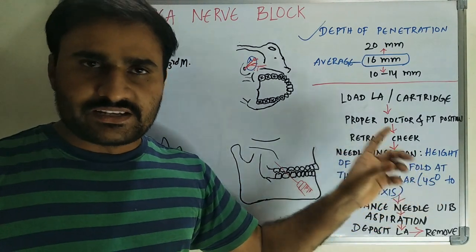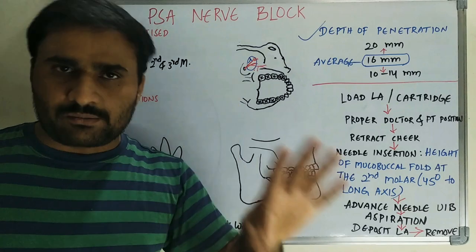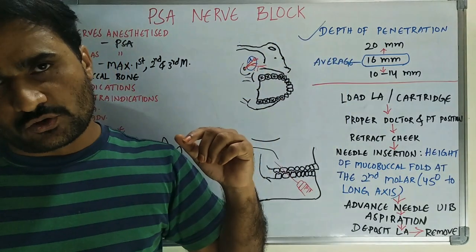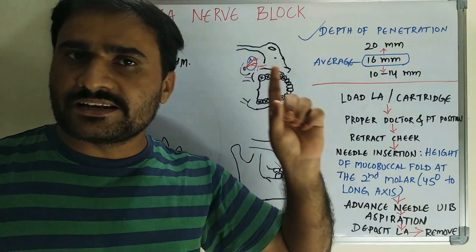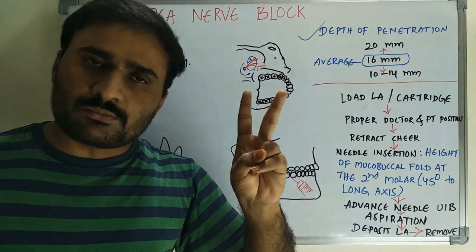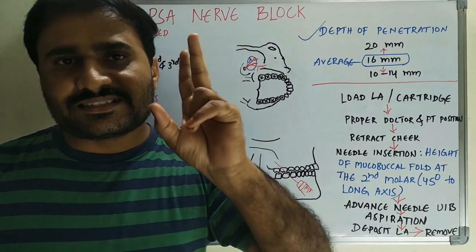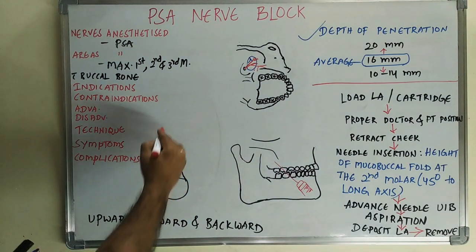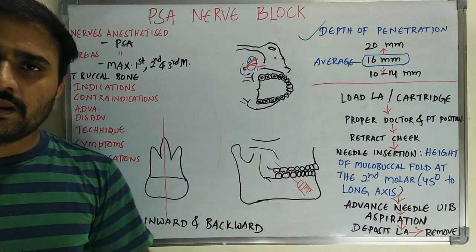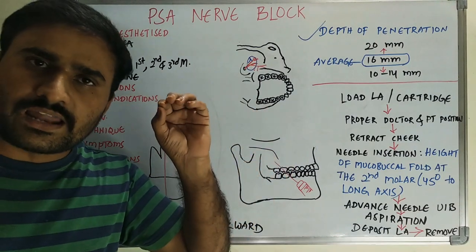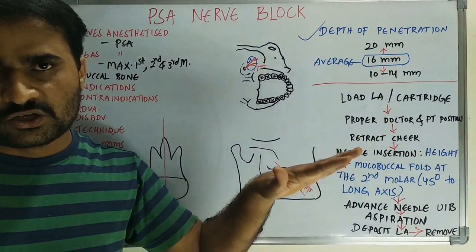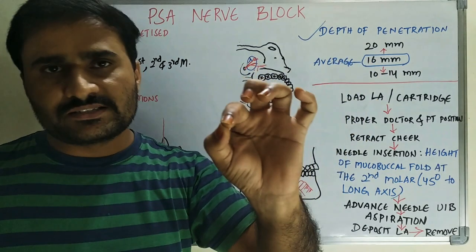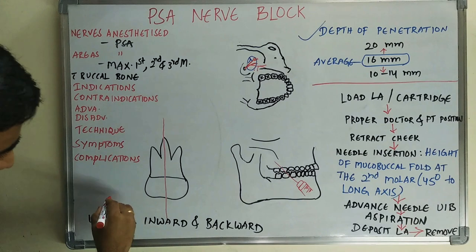For needle insertion, consider the three landmarks. The first landmark is the mucobuccal fold — the junction of alveolar mucosa and cheek mucosa — in the maxillary second molar region. The second landmark is the long axis of the maxillary second molar, which is very important. The third landmark is the maxillary posterior occlusal plane. The mucobuccal fold is the area of insertion.